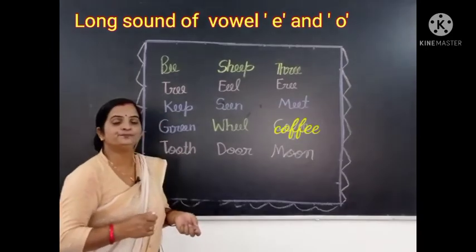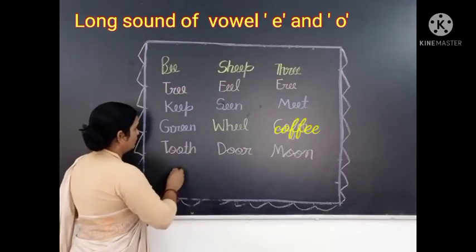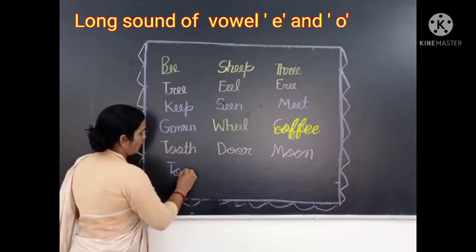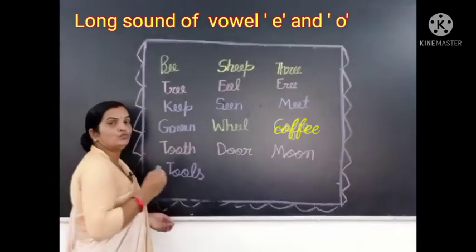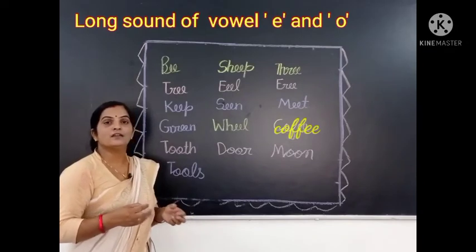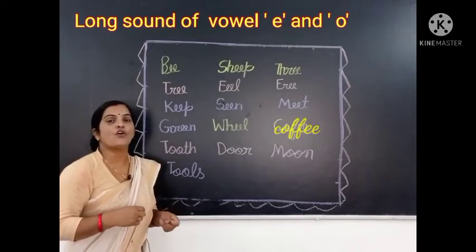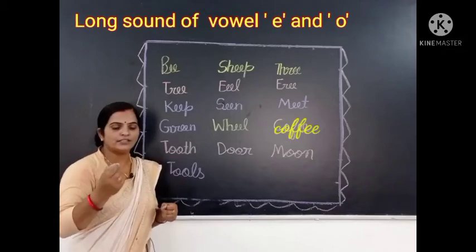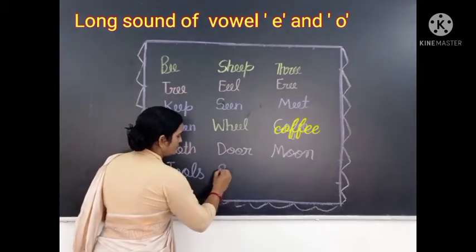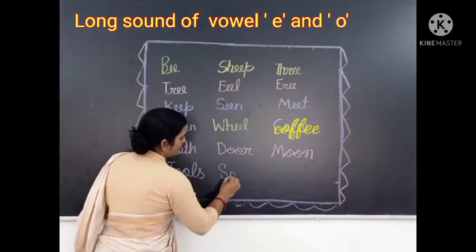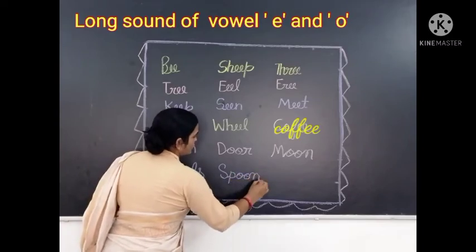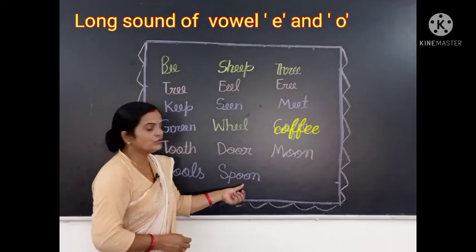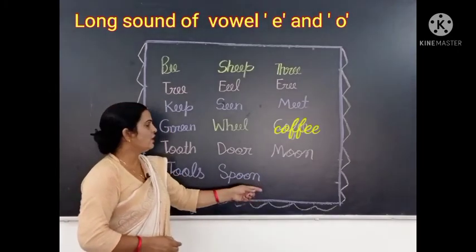Now write the next word: T-W-O-L-S. Tools. Tools means auzaar. Okay? Now we will write the next word: Spoon. S-P-double O-N. Spoon. Okay? This is a long sound of vowel O word. Now the next word: School.